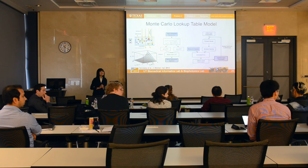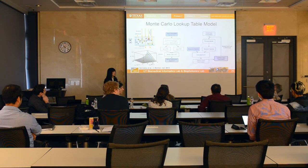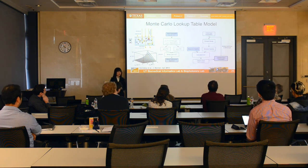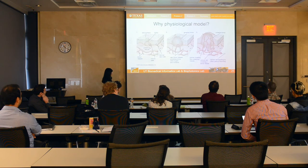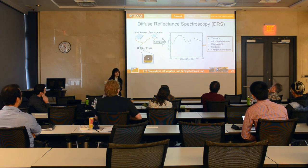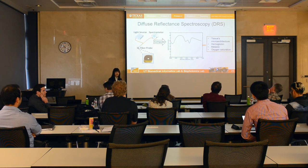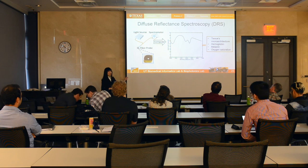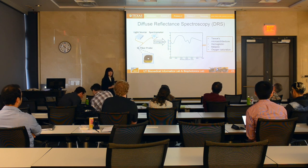What kinds of inputs does your physiological model take? The input is the spectrum — the intensity at different wavelengths. The output is the values for the physiological parameters such as scattering coefficient and oxygenation. So you can map a spectrum to physiological parameters like scattering coefficient and oxygenation. Does that make sense? Yes, thank you.